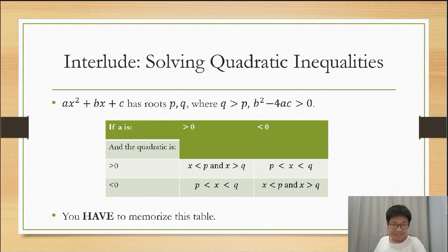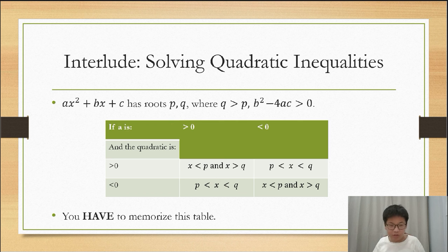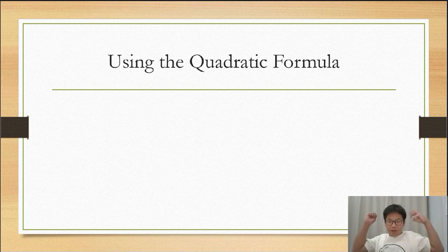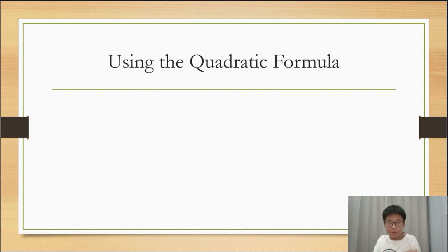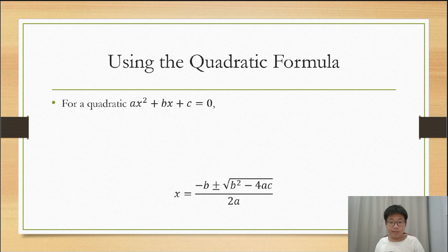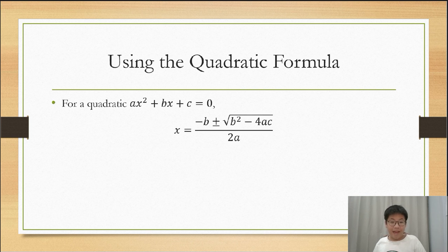So I said there were three methods, right? Let's go on to the most dreaded method: the quadratic formula. Well, it's one of the most dreaded and complicated formulas, but it's also one of the most versatile. So for a quadratic ax² plus bx plus c equals 0, the solutions are: x equals negative b plus or minus the square root of b² minus 4ac, all over 2a.